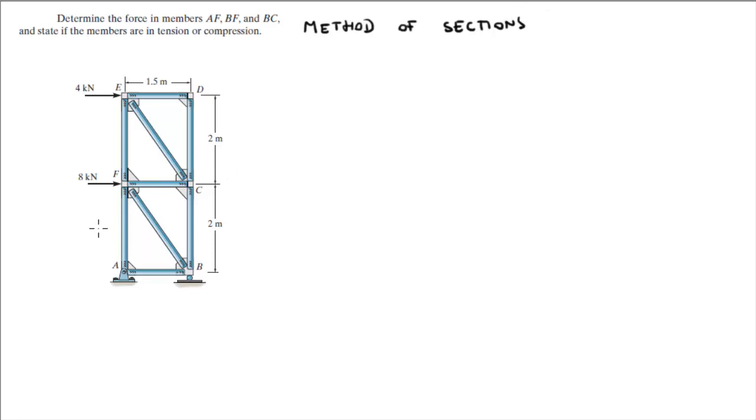Basically what you want to do is you want to pick the three members that you have to find the components, and you want to cut the truss right there. No more than three usually is the rule.